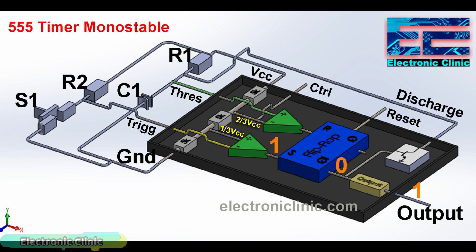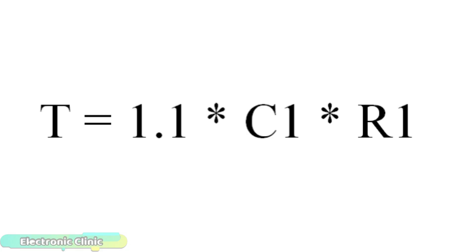Meanwhile the output of the 555 timer IC remains high. As the capacitor charges and the voltage reaches two-thirds of VCC, the output of the 555 timer goes low. So the on-time of the 555 timer depends on the values of resistor R1 and capacitor C1. Large value capacitors will take a lot of time to charge. We can calculate the time by using this formula.